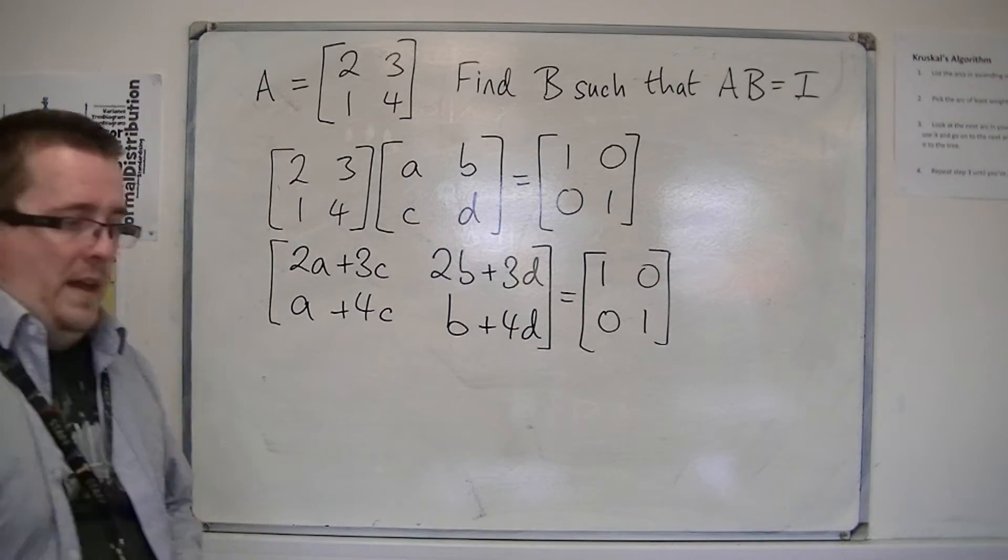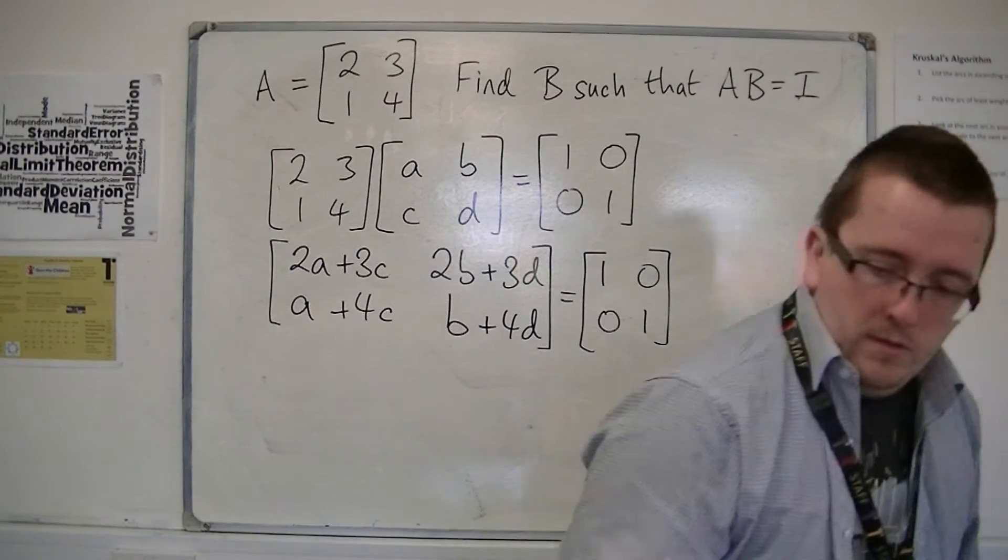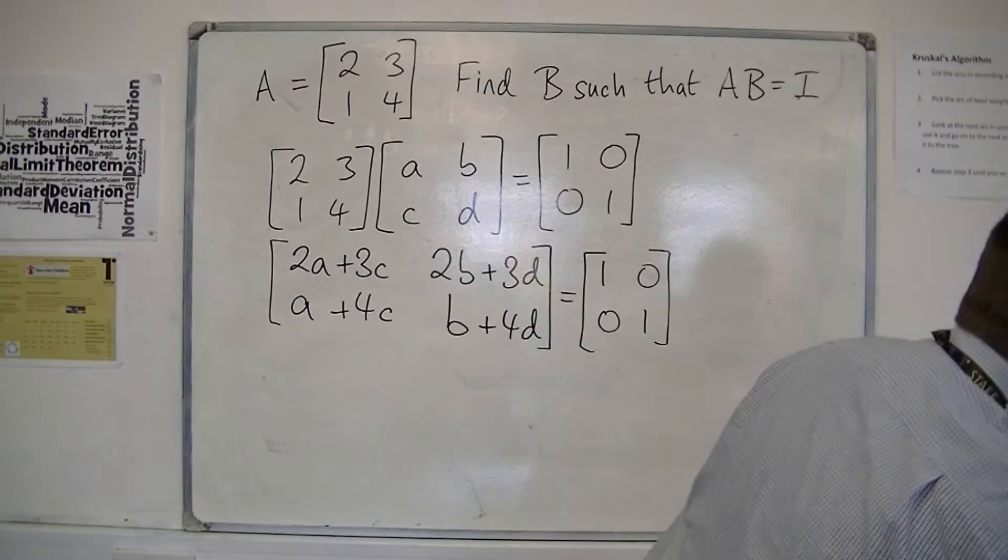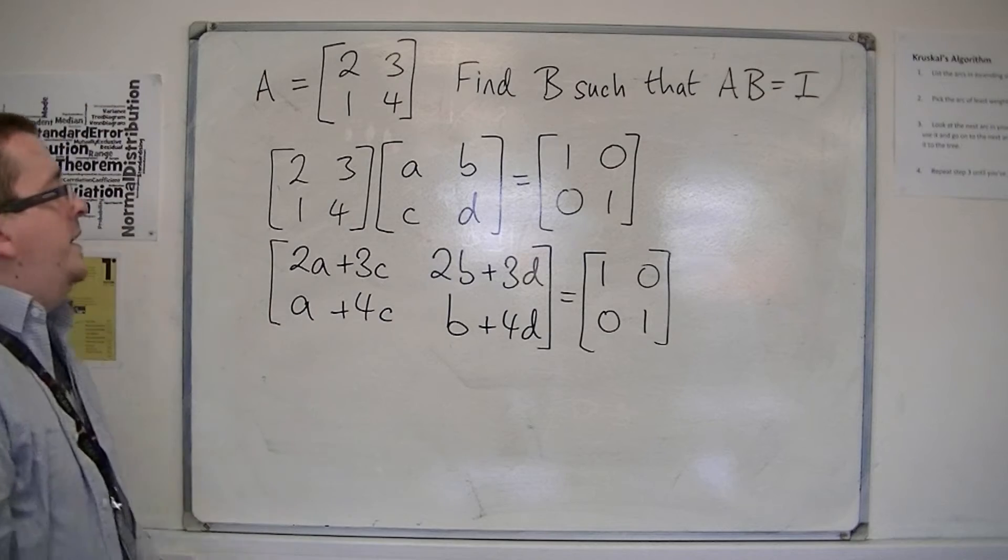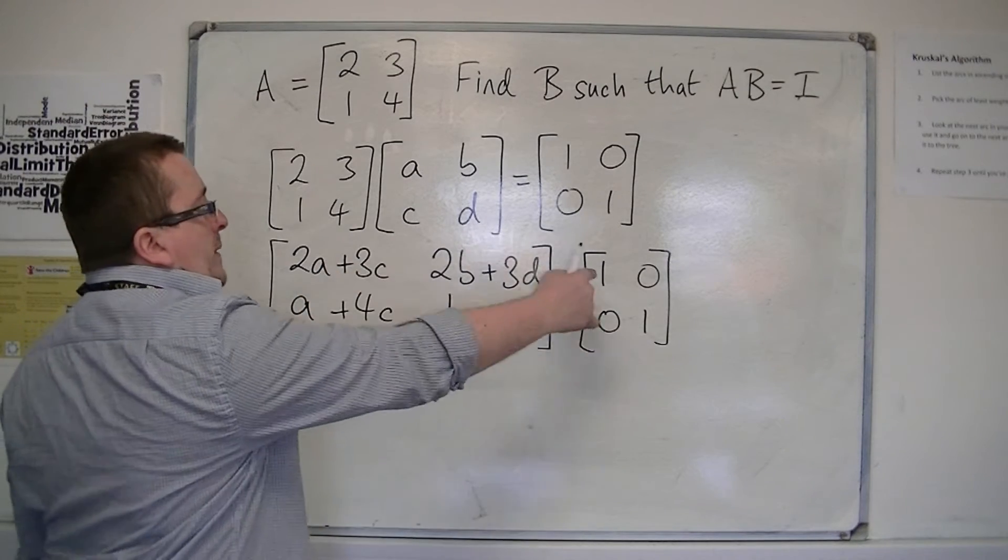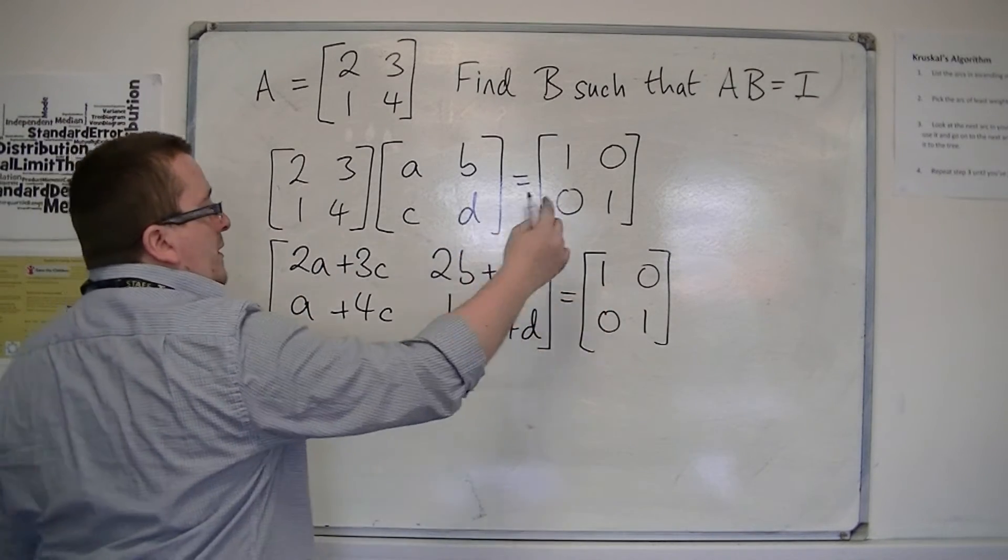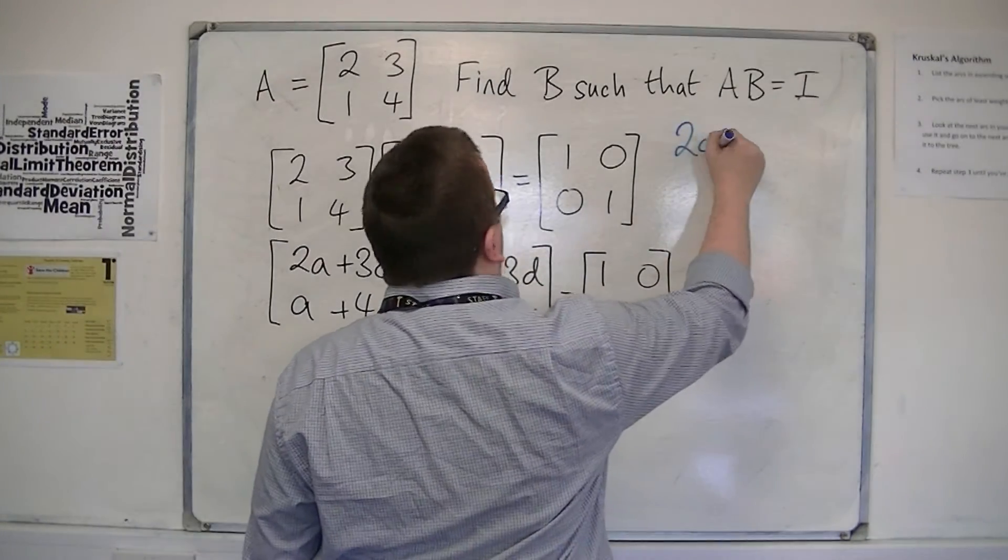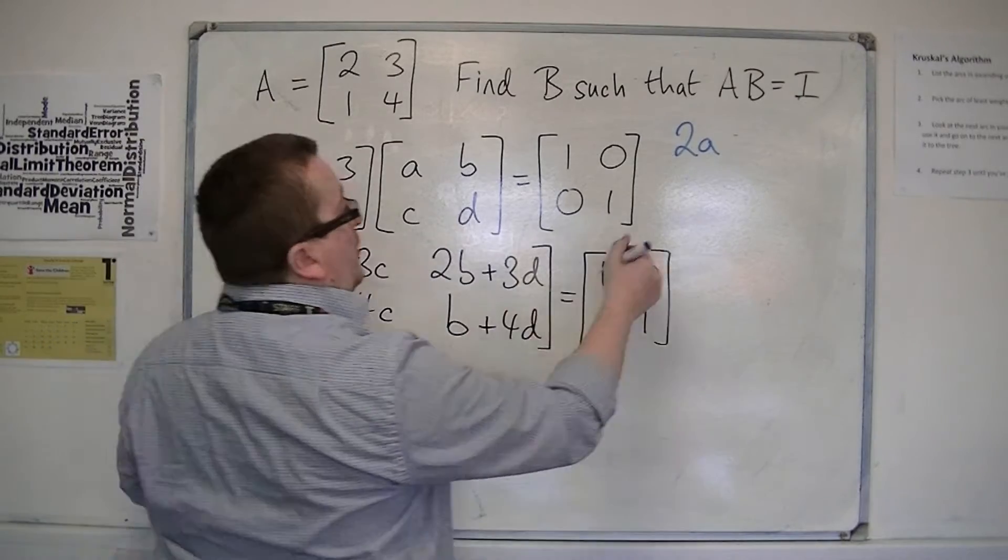So what we can get from that is that this element must be the same as that element, and so on. So that means that 2a plus 3c must be 1.